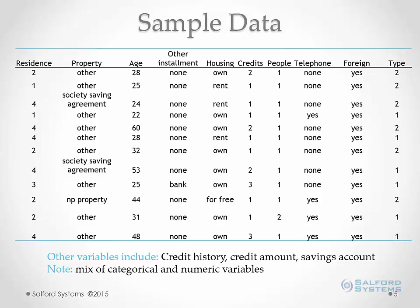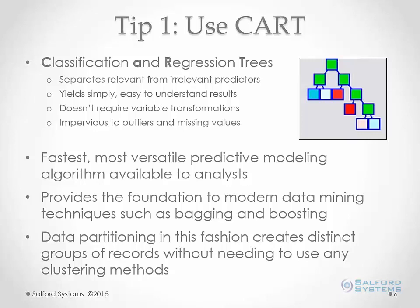Our tip 1 for customer segmentation is to use CART. Classification and Regression Trees can be an extremely powerful method. It separates relevant from irrelevant predictors automatically, and the results are simple and easy to understand. As shown in the picture of a CART tree, you start with all your data and simply partition based on some attributes. It doesn't require any variable transformations by the analyst, as you would need in logistic regression.